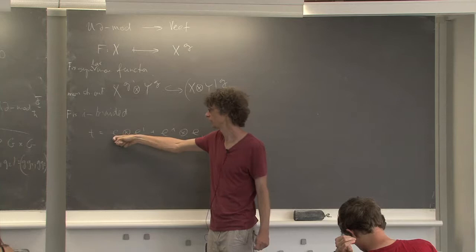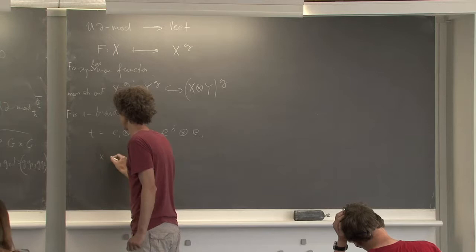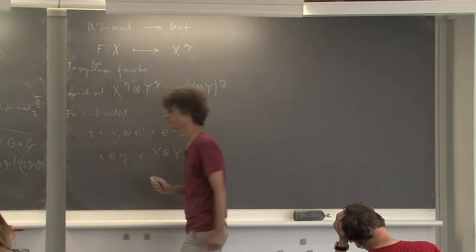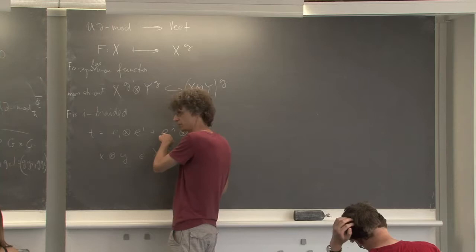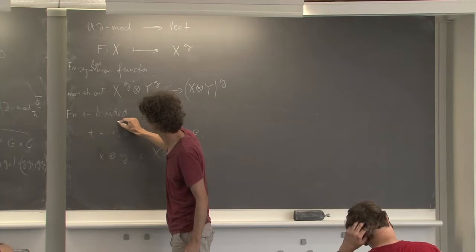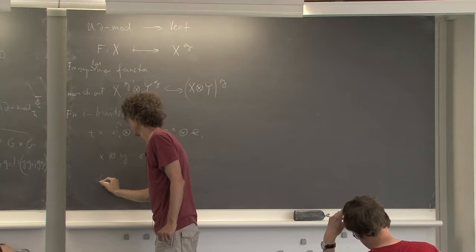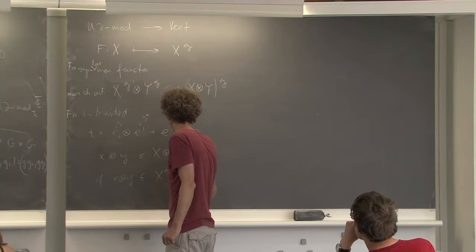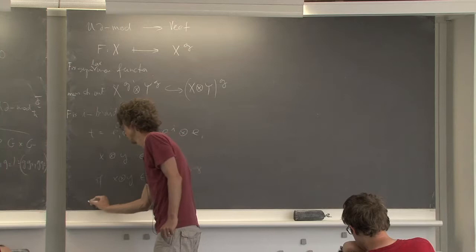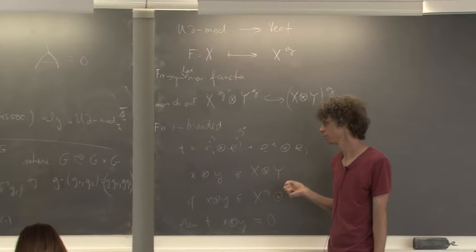The reason why it disappears: T is something like e_i tensor e^i plus e^i tensor e_i. So when we act with this guy on X tensor Y — if both of those things are actually G-invariant — this is a basis of G, G-star is going to act non-trivially, but G is going to act trivially on invariants. So if X tensor Y is in X^G tensor Y^G, then T acting on X tensor Y is simply zero.